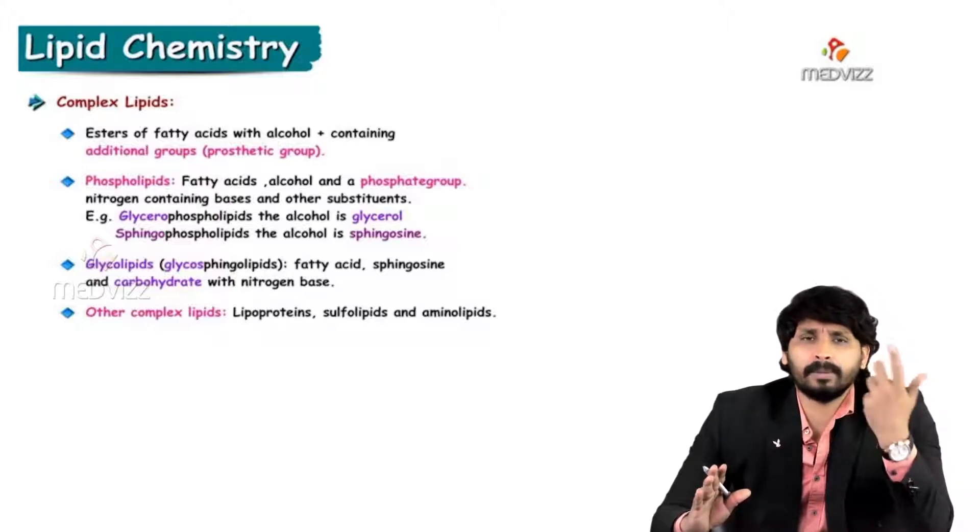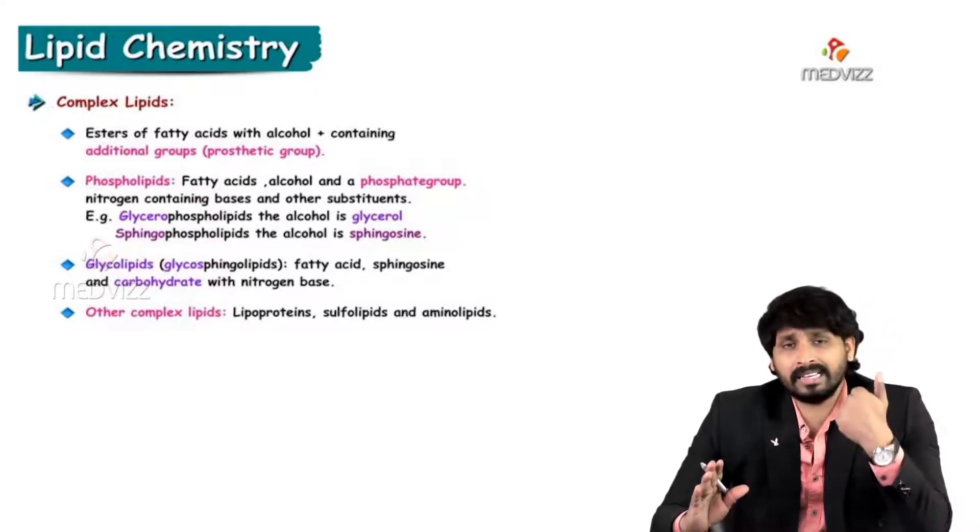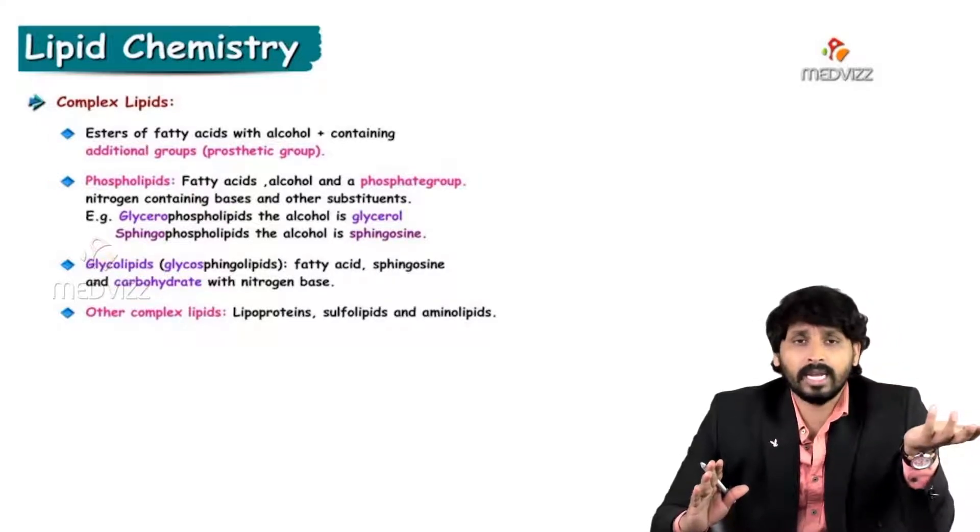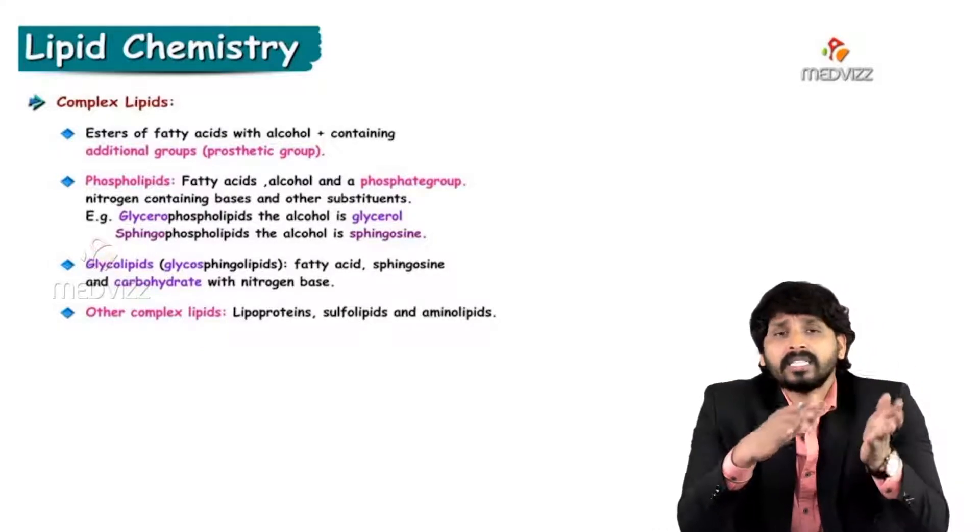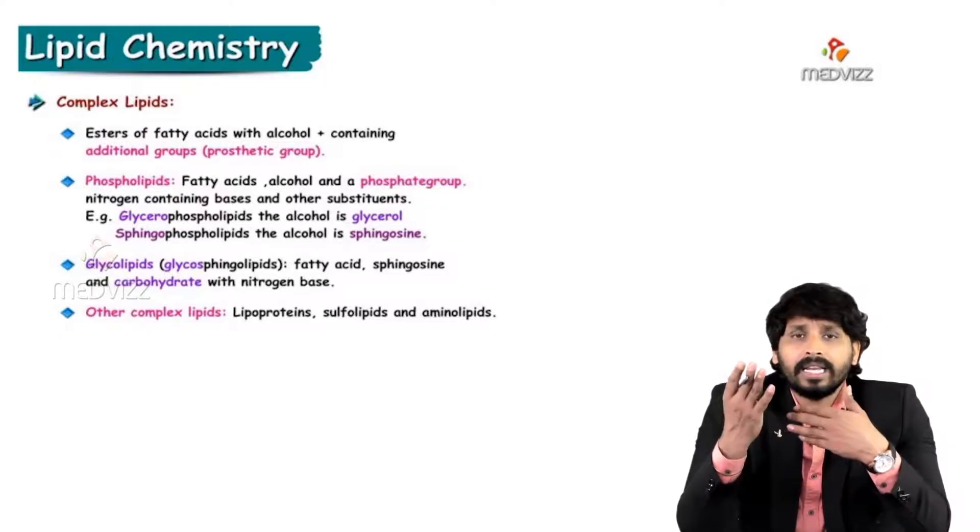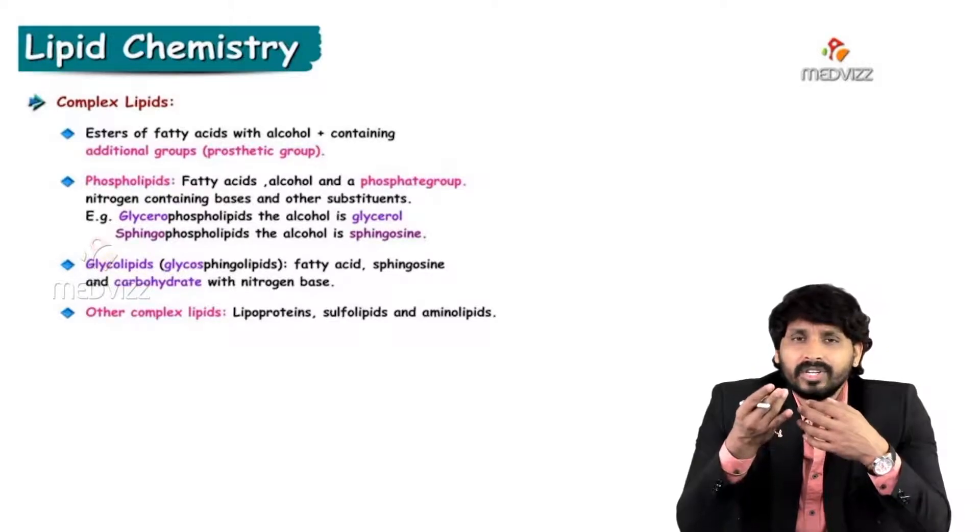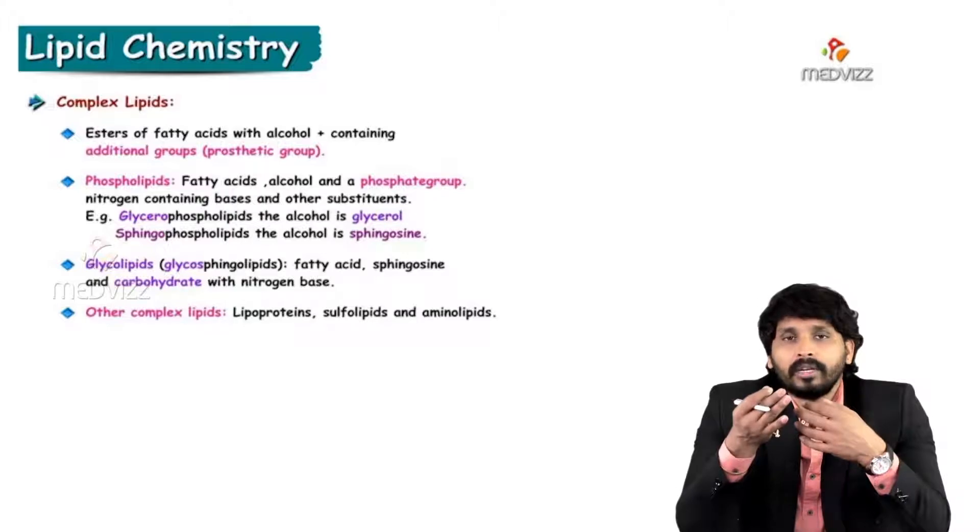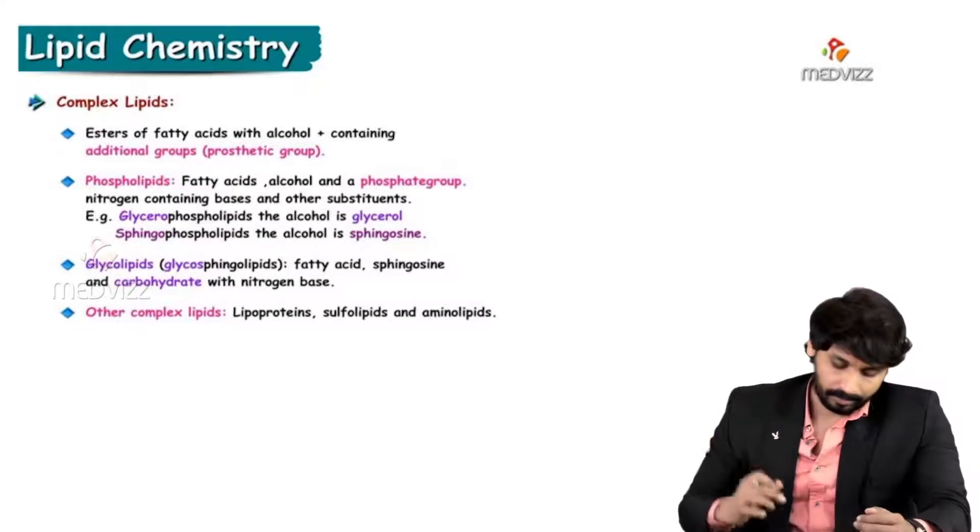And other complex lipids are there. Lipoproteins are there. Lipoproteins, you can say chylomicron is there - they're combination with proteins. Glycolipids as combination with carbohydrates. Similarly, lipids in combination with proteins known as lipoproteins. Example, I can give here: chylomicron, high-density lipoprotein HDL, low-density lipoprotein LDL, very low-density lipoprotein VLDL. All these comes under other complex lipids.